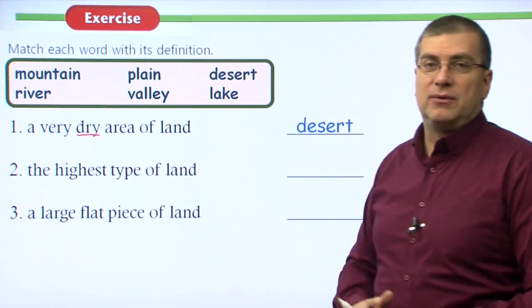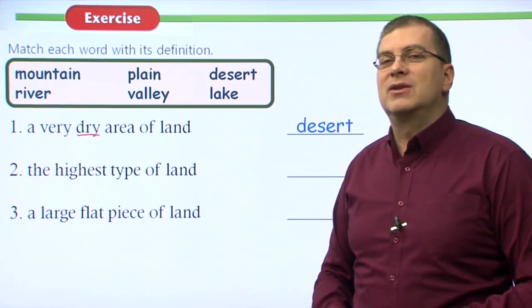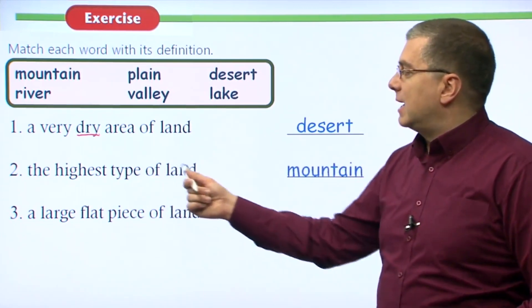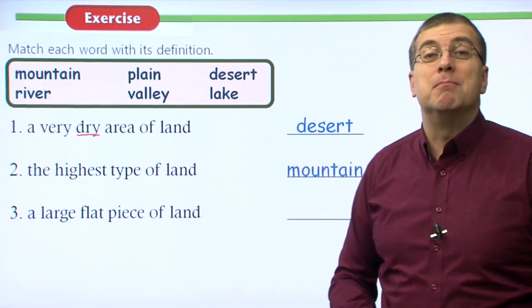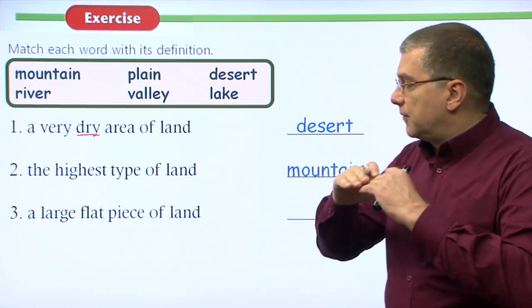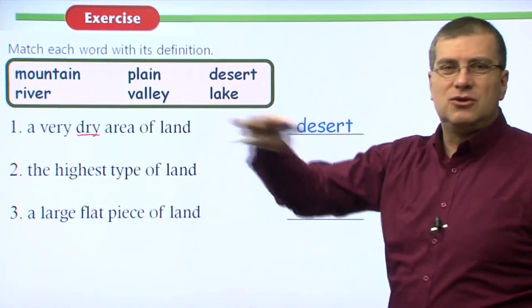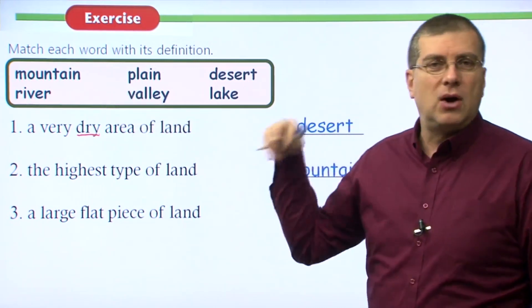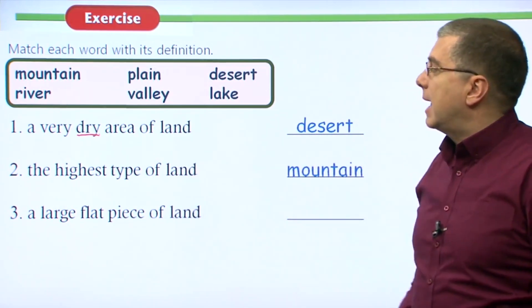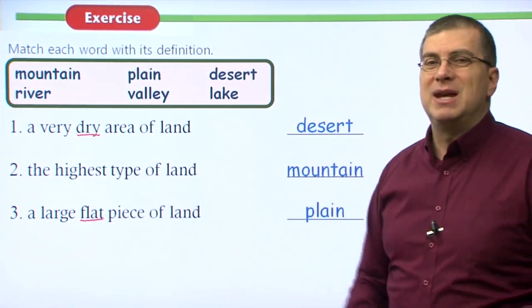Number two: the highest type of land. Remember the highest place on Earth is Mount Everest — 'mount' is for mountain. So the highest type of land is a mountain, and it's very steep too. Number three: a large, flat piece of land. You can see very far, there aren't many trees, and many animals run around on it. The key word is flat. We call that a plain.